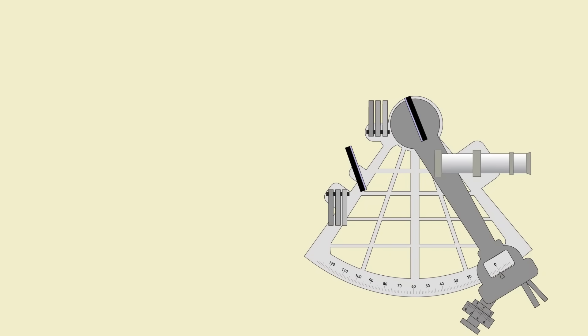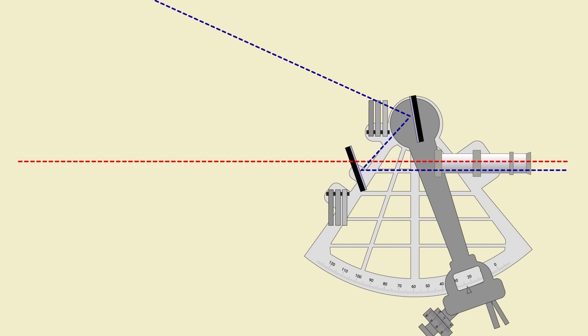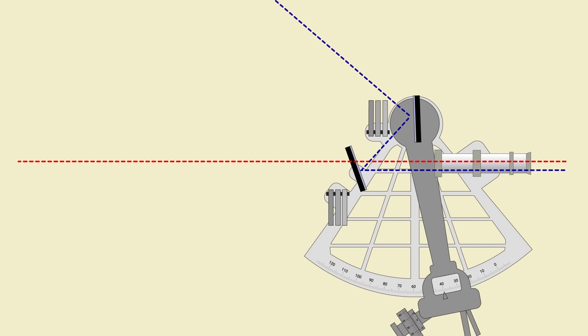We've already said that when set at 0 degrees, both rays of light come from the same direction. If we change the angle between the mirrors, say we rotate the index arm by 20 degrees, the rays of light now come from different directions. Although the angle between the mirrors is only 20 degrees, the angle between the rays of light is 40 degrees. This is that double reflection principle in action.